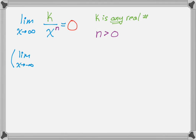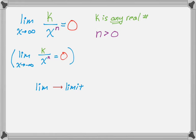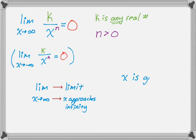You should also be able to figure out that if x goes to negative infinity, we're also going to get zero — so the plus or the minus, it doesn't really matter. Just so you're clear: 'lim' is limit, and then x with that arrow and infinity means x approaches infinity. What that means is that x is just going to grow without bound — bigger and bigger — and there's no limit to it, so it goes to infinity.